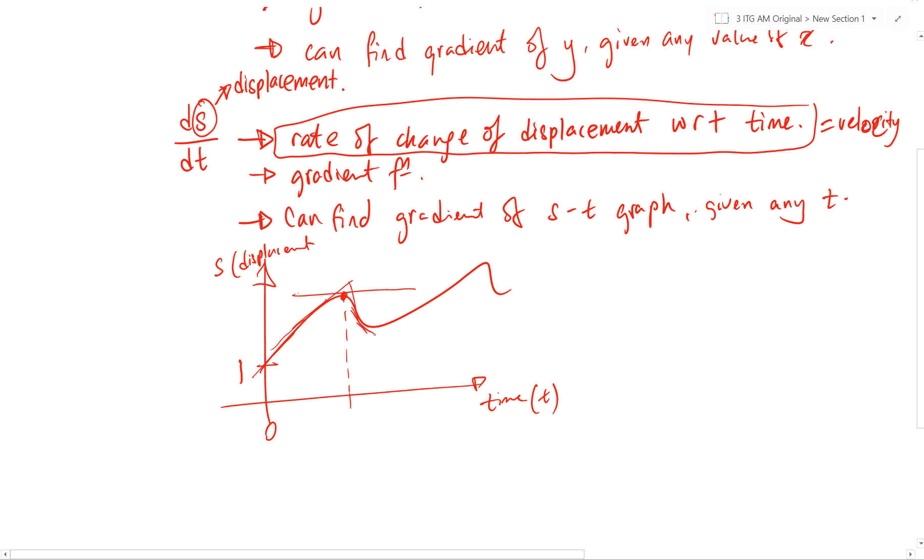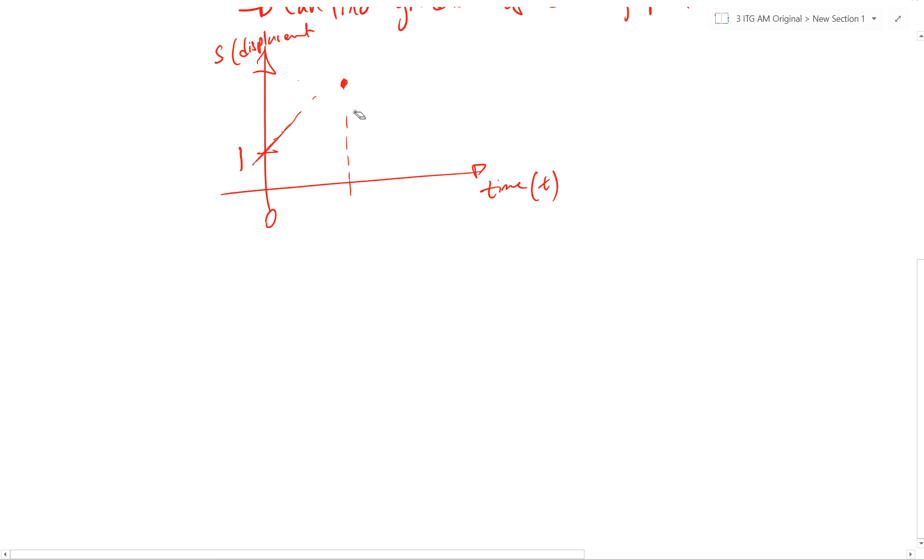So after that, we can have another turning point over here. Then it went up again. Okay, so far? Any questions? No, huh? Okay, next. Next thing. From here, I can actually plot every single gradient over here. And I can translate it. Okay, let's choose an easier graph. Let's say we have a graph that looks like this.